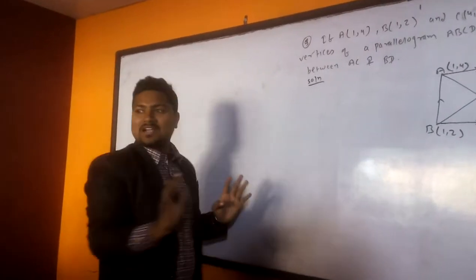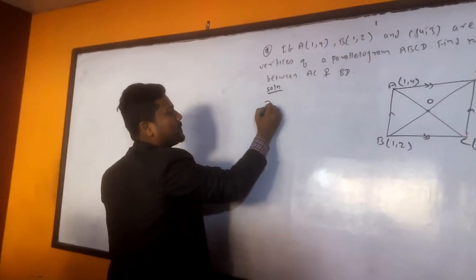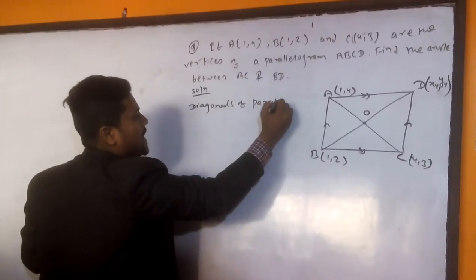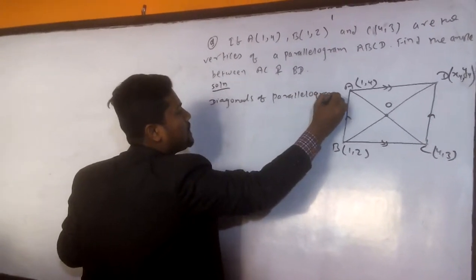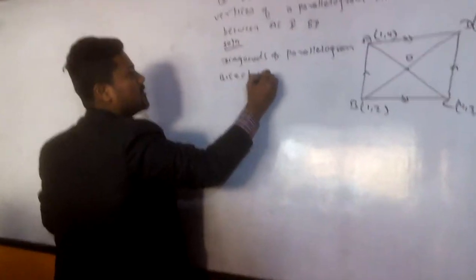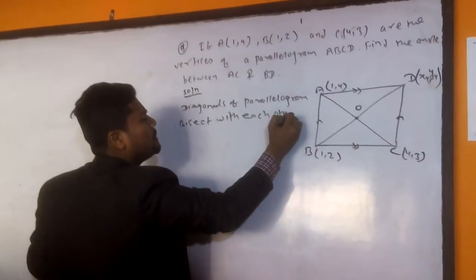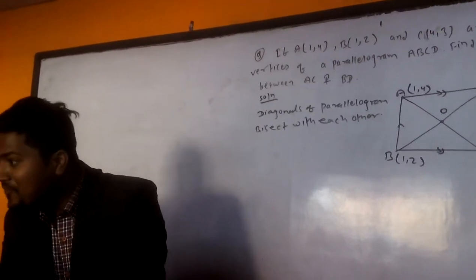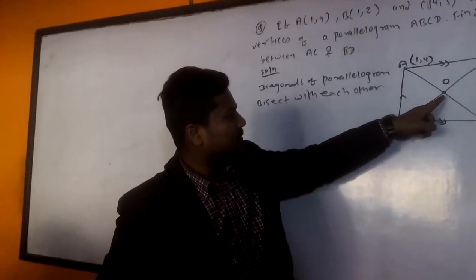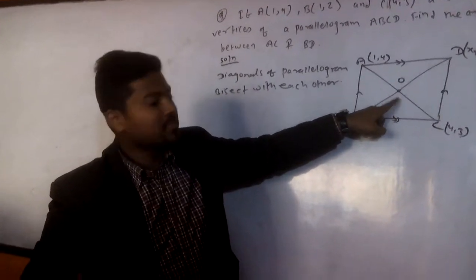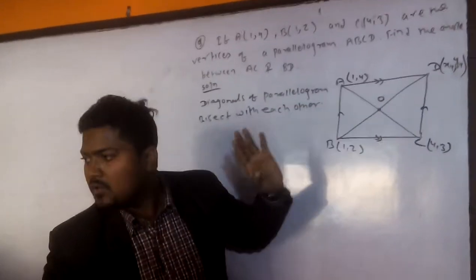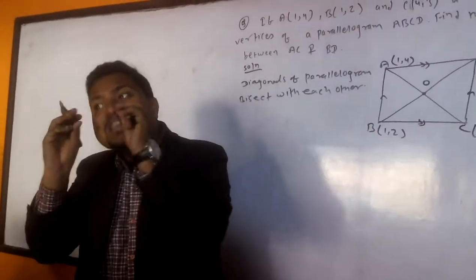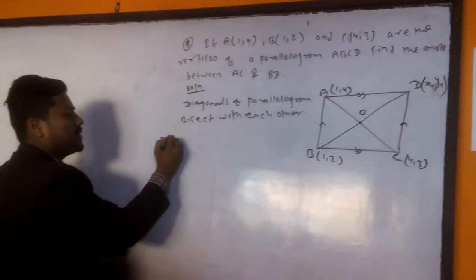You can say this is always the midpoint. So now, first of all, before we start, we have to write diagonals of parallelogram bisect with each other. So bisect with each other, what is the meaning of bisect with each other? It means what? Midpoint of AC also O. And midpoint of BD also O. Their midpoints are equal. That means bisect with each other means diagonal midpoints are same.